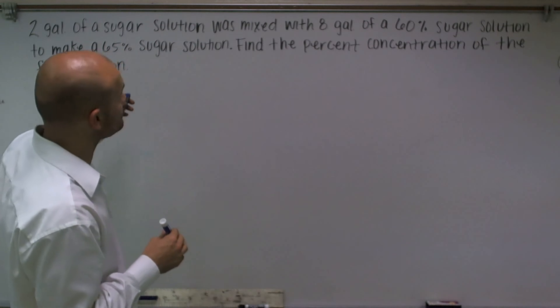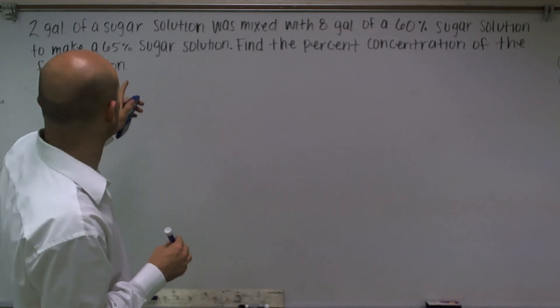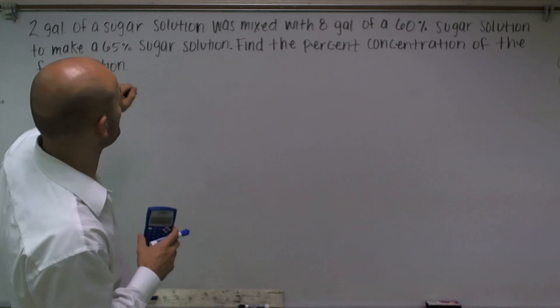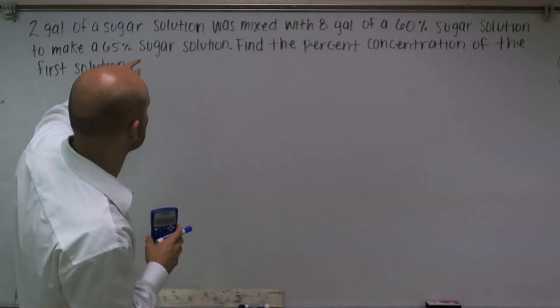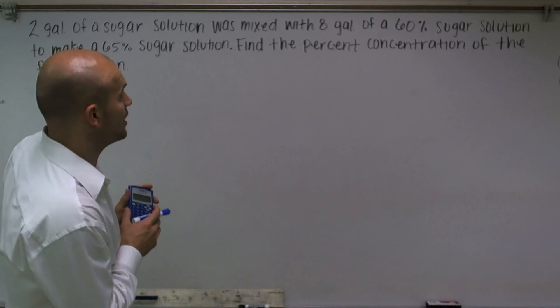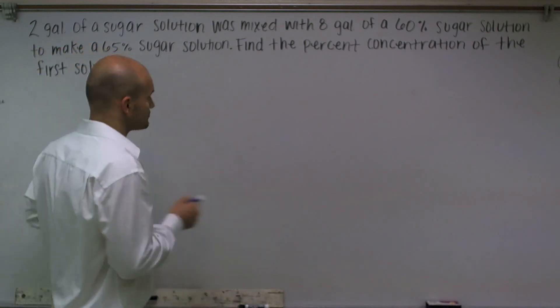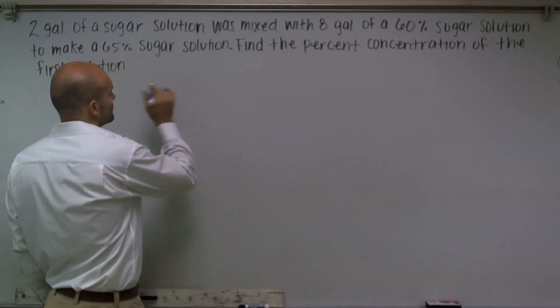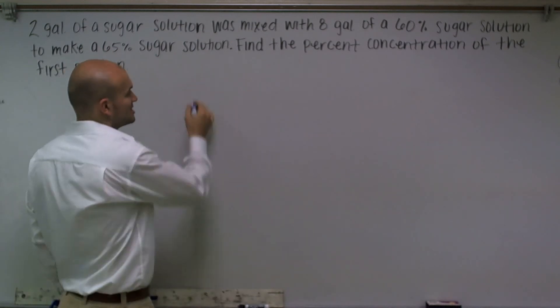So it looks to me that we have a couple types of sugar solutions. We have two gallons of a sugar solution that was mixed with eight gallons of sugar solution of 60%. So let's think about it. We have two solutions. One is a 60% solution.